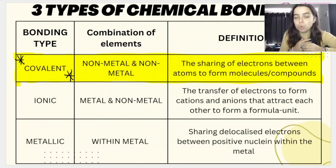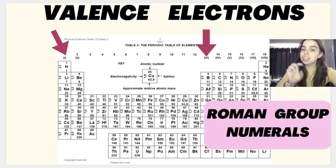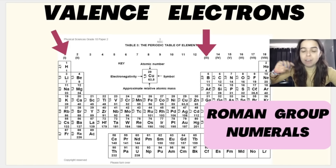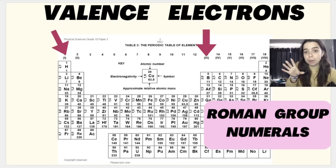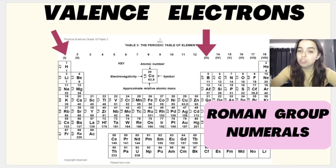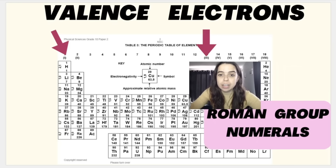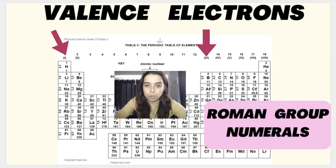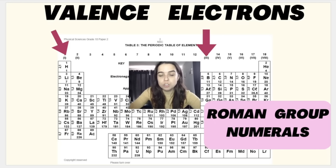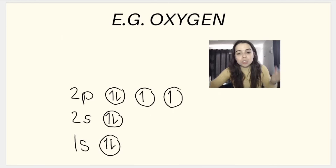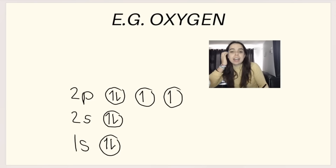Lewis dot diagrams always work with valence electrons — the electrons found in the outer energy levels of an atom. A quick way to find the number of valence electrons is to look at the Roman group numerals on your periodic table. For example, boron has three valence electrons. We can also use an Aufbau diagram to determine how many valence electrons an atom has.